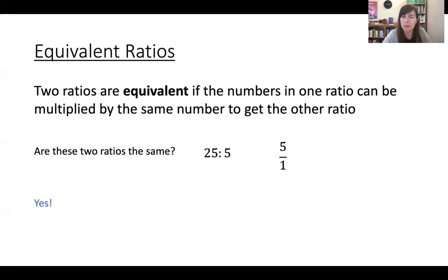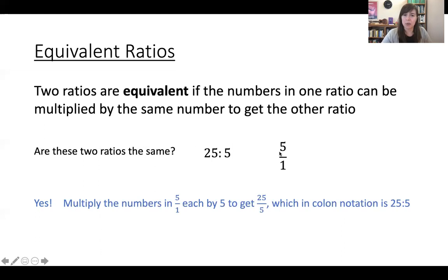Another way to do it, which is more in line with your book's definition of equivalence, is to say, let's multiply the numbers in the ratio 5 over 1. If we multiply each of these numbers by 5, then we get 25 over 5, and then we convert 25 over 5 into colon notation to get 25 colon 5.